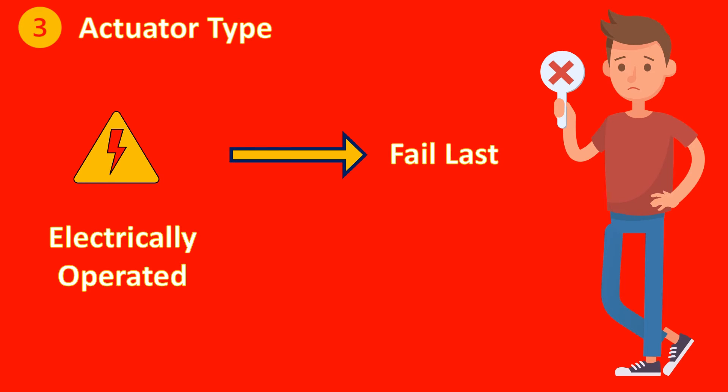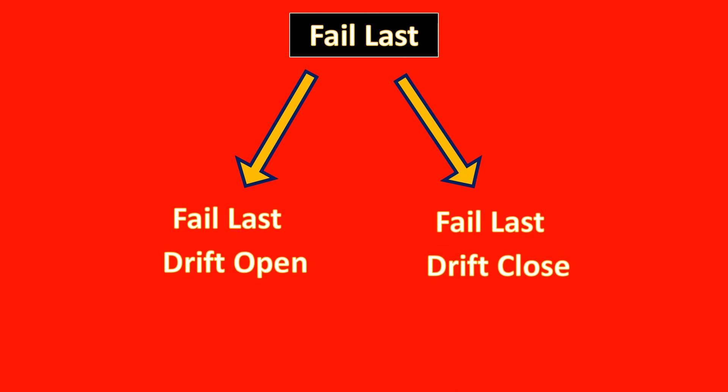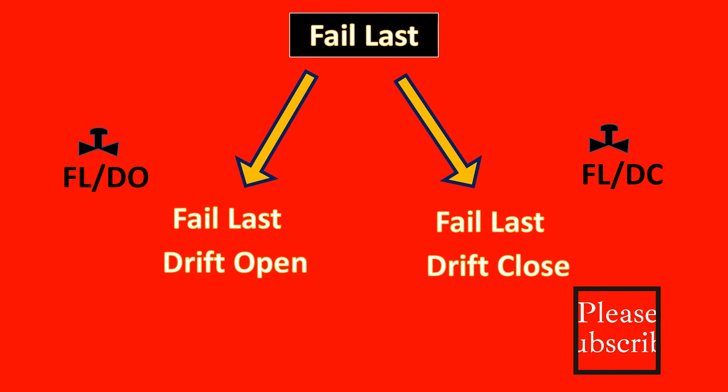An electrically operated valve usually has the failure mode as fail last. Now this is not only sufficient to mention fail last. Why? Let us look at that. Fail last is further divided into fail last drift open and fail last drift close, with an example in PIDs like FLDO and FLDC. Let us understand this amazing example.